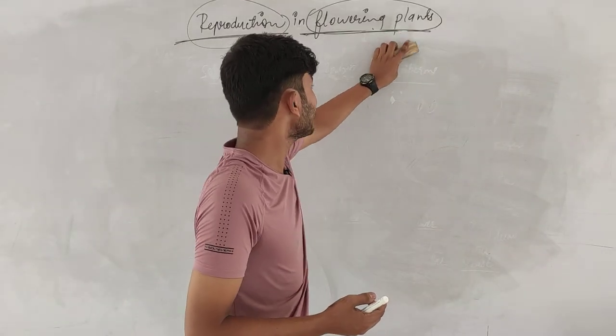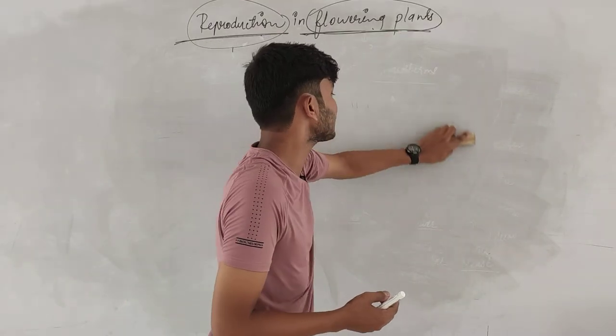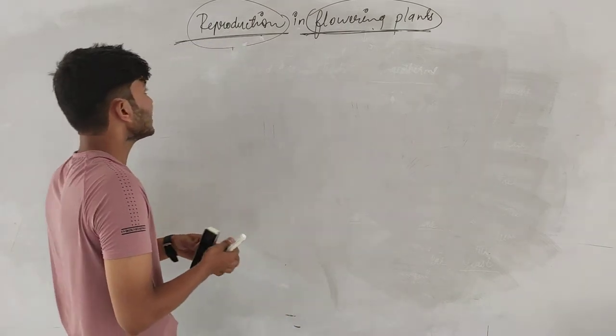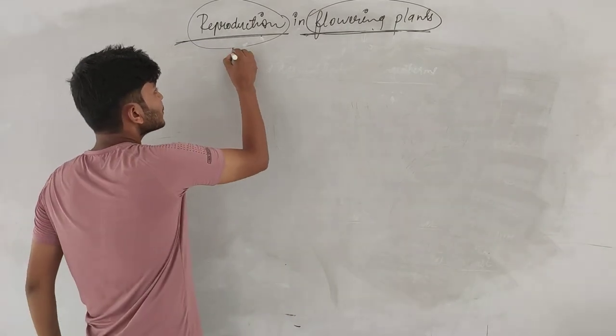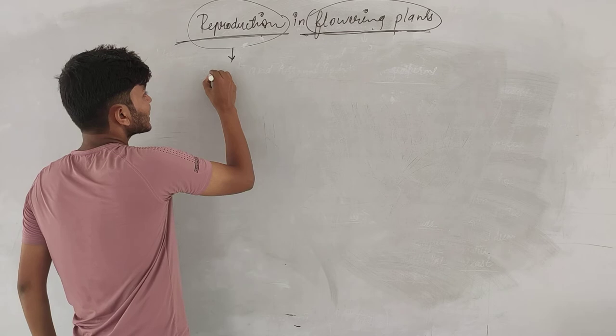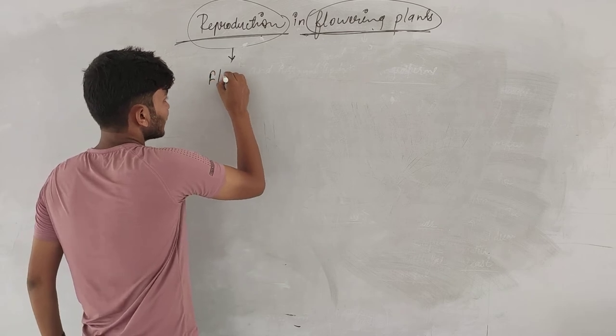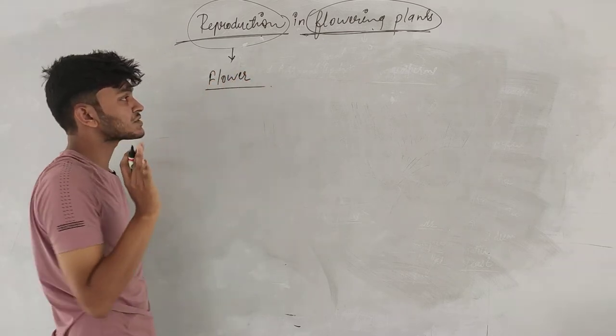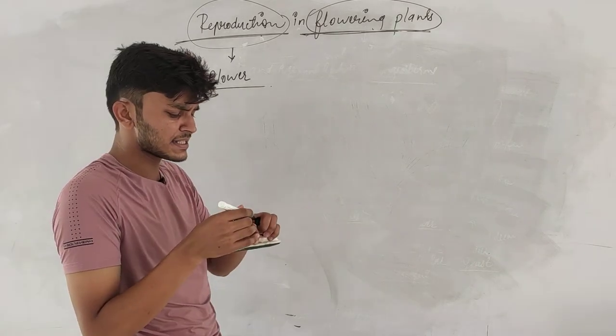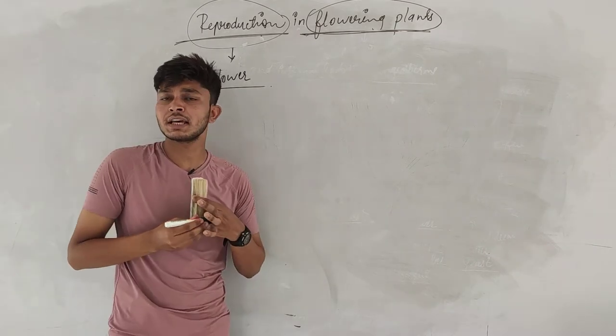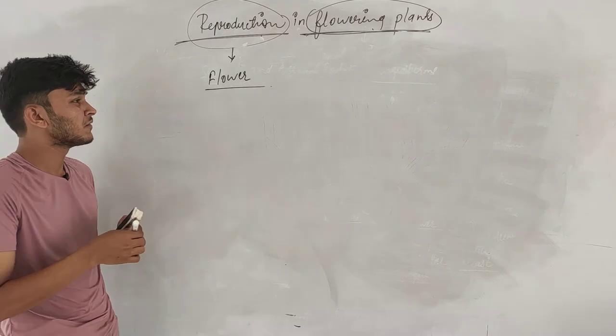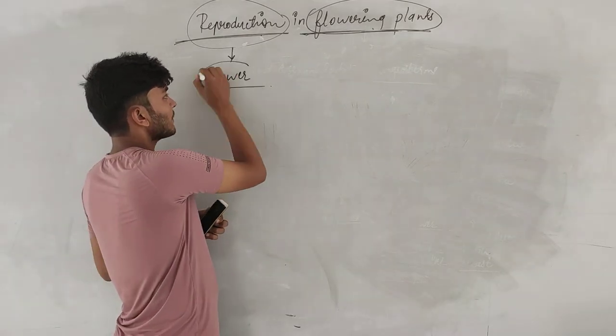So we will talk about sexual reproduction. Whenever we talk about sexual reproduction, we always talk about the reproductive structure, and that reproductive structure is known as flower. But in our mind, what is a flower? What is a flower and how it is developed?